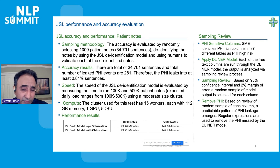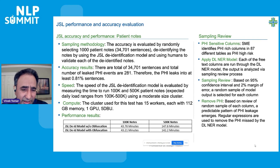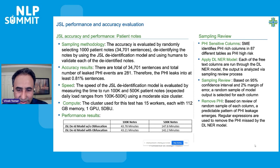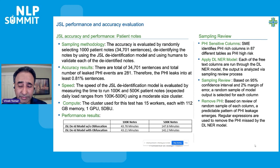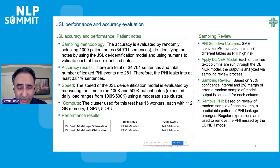The other issue is processing speed. We are currently using a medium-sized GPU cluster with 15 nodes and 112 gigabytes of memory. With that setup, we can de-identify 100,000 notes in around 45 minutes, and half a million notes in about 147 minutes. This means we can handle our daily load within a couple of hours using a moderately sized cluster. For the historical load, we are using much larger clusters.